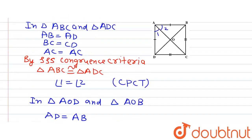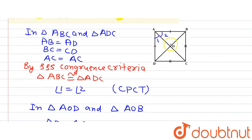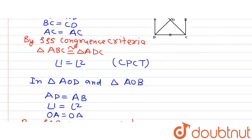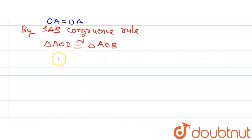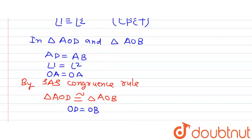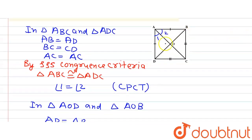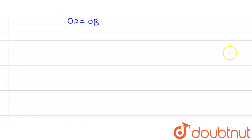Since triangles AOD and AOB are congruent, we can say that OD equals OB by CPCT. Also, if we name the angles at O as angle 3 and angle 4, then by corresponding parts of congruent triangles, angle 3 equals angle 4.